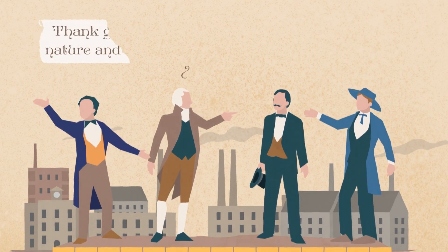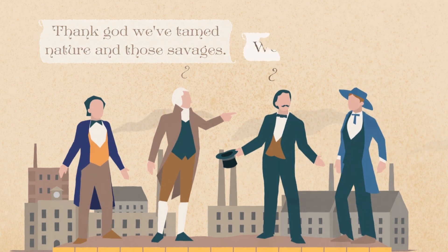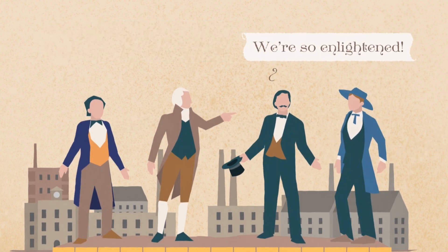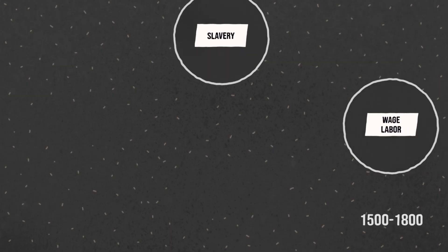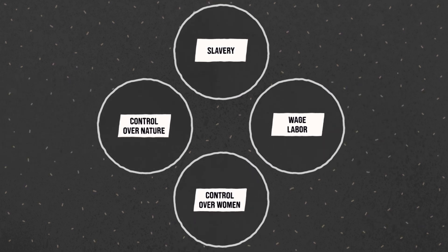Rather than acknowledge that this great wealth and new way of life had been made possible by violence, Europeans called these developments the Enlightenment. Over a period of almost 200 years, violent systems of slavery, wage labor, control over women, and control over nature developed and connected to each other.